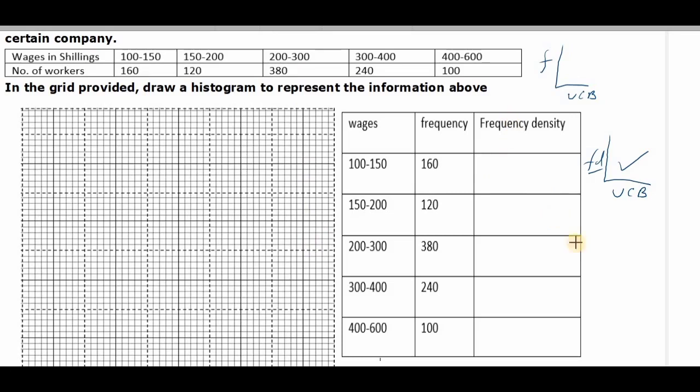For us to calculate the frequency density, we'll use the formula: frequency density equals frequency over the class interval for that particular class. So you have the frequency, 160 over the class interval. You take 150 minus 100, that is 50. So the frequency density for this case is 3.2.